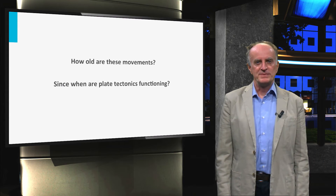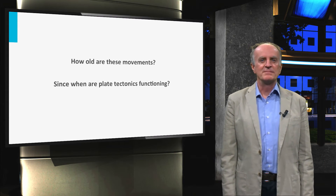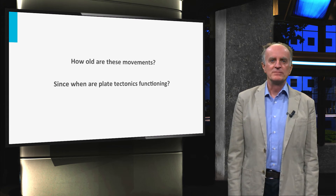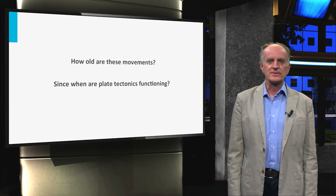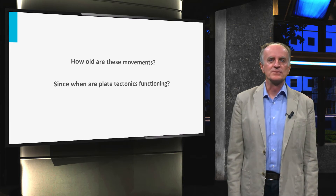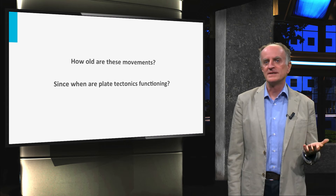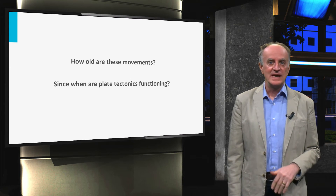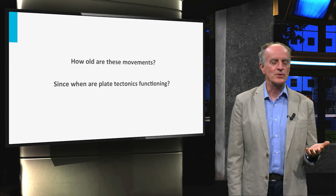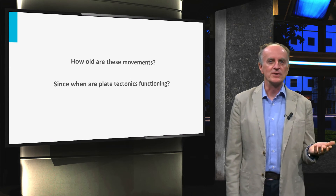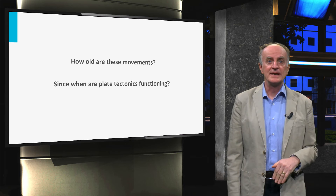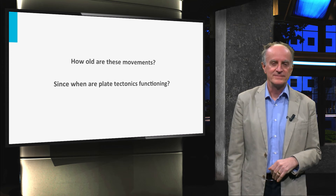GPS describes very accurate movements at the earth's surface during the last decades at most. But when did these movements start? Have these movements always been going on? And since when?